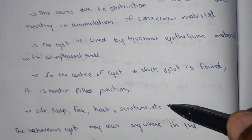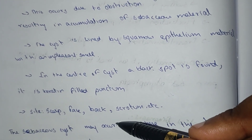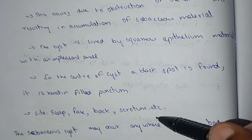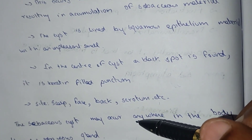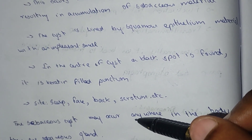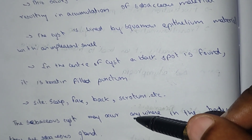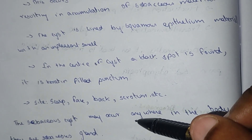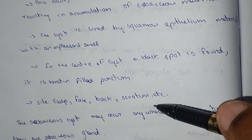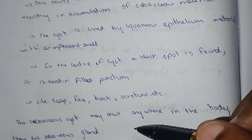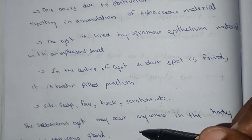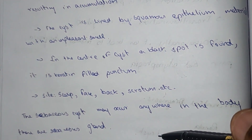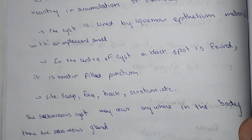Most of the cysts are found in the scalp region, face, back, scrotum, and buttocks. Sebaceous cyst may occur anywhere in the body where there is a sebaceous gland.